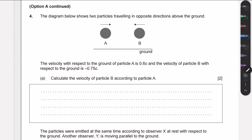In question two we have two particles traveling in opposite directions above the ground. The velocity of particle A with respect to the ground is 0.60c to the right, and particle B is moving at 0.75c to the left. We need to calculate the velocity of particle B according to particle A. We cannot simply add the velocities, as that would contradict the postulate that the speed of light is constant, so we use the relativistic velocity transformation formula.